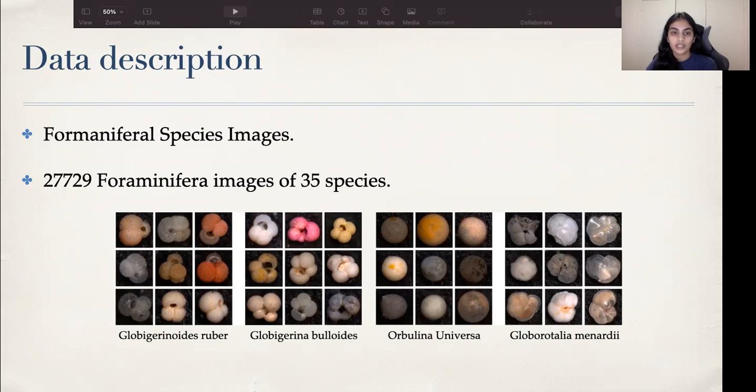We're using the dataset of foraminiferal species images collected from Endless Forams. Planktonic foraminifera are marine mixotrophic protists that are widely used to reconstruct past oceans and climates. Due to the abundant fossil record of the calcite tests throughout much of the world's ocean, they are also a focal taxa for studies of biology, ecology, and evolution.